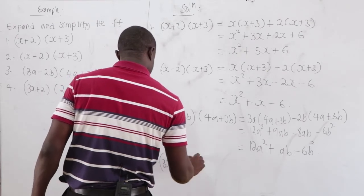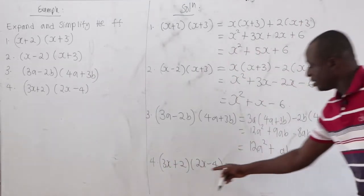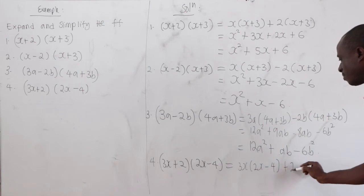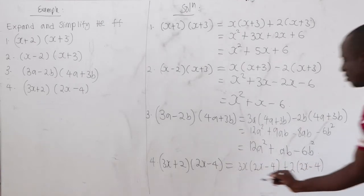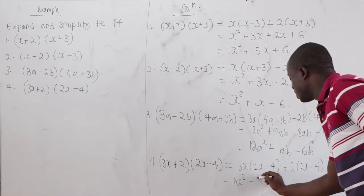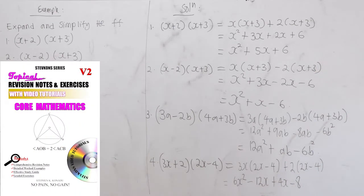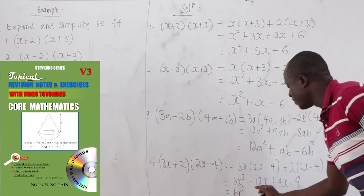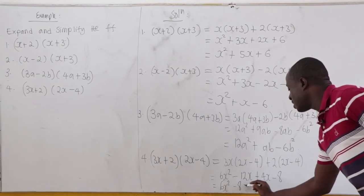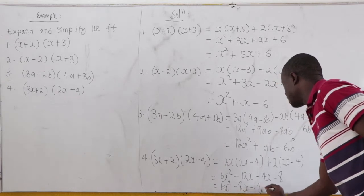Fourth: 3x plus 2 times 2x minus 4. Pick 3x: 3x times 2x equals 6x squared, 3x times negative 4 equals negative 12x. Pick 2: 2 times 2x equals 4x, 2 times negative 4 equals negative 8. Grouping: 6x squared, negative 12x plus 4x equals negative 8x, minus 8.